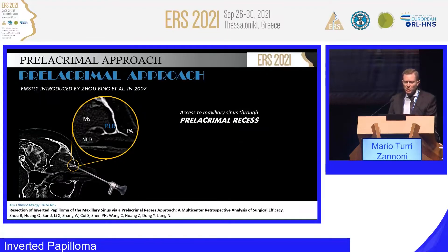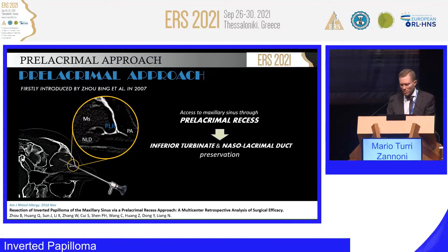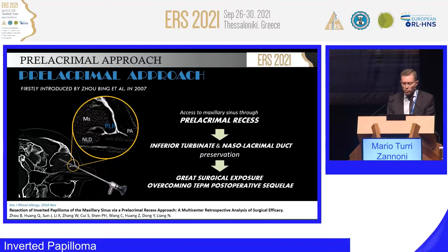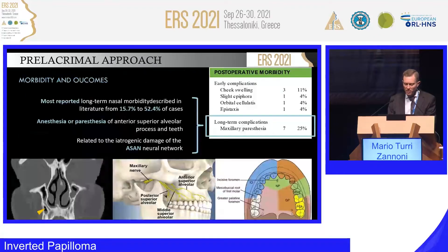Moreover, based on radiological exam, you can also try to assess if a minimally invasive pre-lacrimal approach is feasible. The pre-lacrimal approach has been introduced recently in the management of inverted papilloma involving the maxillary sinus, in order to spare the nasolacrimal duct and inferior turbinate and reduce the extension of resection. The pre-lacrimal approach has proved to be safe and effective, reducing the risk of empty nose syndrome, postoperative crusting, epiphora, and the risk of neuralgia and damage of the anterior superior alveolar nerve — a small sensory branch from the infraorbital nerve providing sensory innervation to the upper teeth and hard palate.